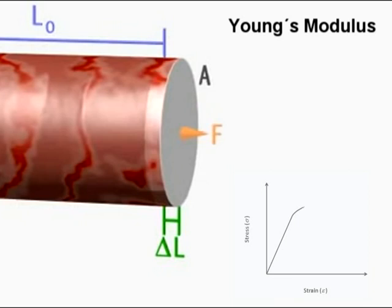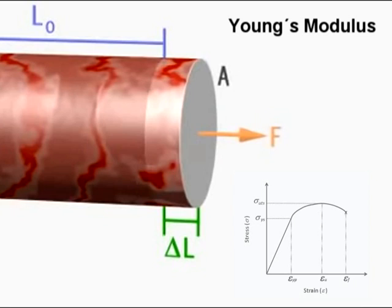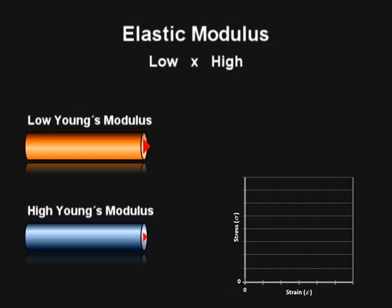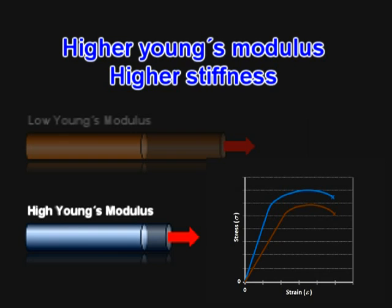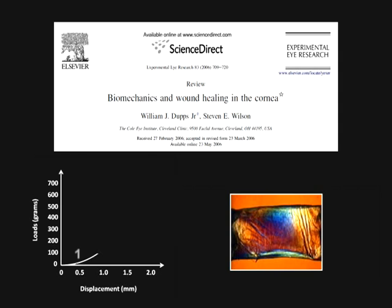Young's modulus, also called the tensile elastic constant, is calculated as the slope of the linear region of the measured stress versus strain graph of a material. High elastic modulus means the specimen stretches less and is thereby stiffer. Stiffness is a structural property and Young's modulus is a material property. If a material has a higher Young's modulus, it is also stiffer.